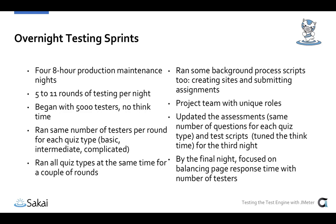By the third night we updated the assessments so they all had the same number of questions per quiz type, and tuned the test scripts to introduce additional think time using variables. What we learned from the first two nights was that there were definite bottlenecks and we wanted to spread them out to see where they were happening — whether at login, session creation, site navigation, or quiz creation — because everything was tightly compressed in the original rounds. By spreading steps out with delays, we could clearly identify which part of the system needed tuning.